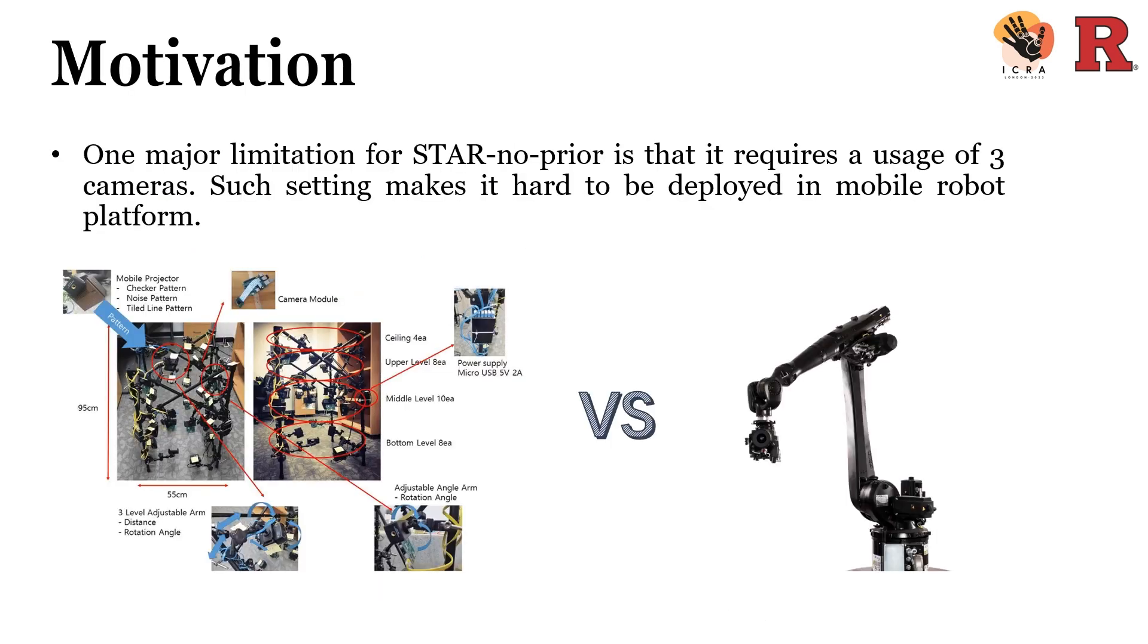Although powerful, STAR-no-prior requires at least three cameras, which makes it impractical in real mobile robots. However, it is not trivial to transfer from multiple camera setting to single camera setting. The main reason is that single camera cannot provide enough validated data association, and it is hard to handle both non-rigid deformation and topological change with single camera.